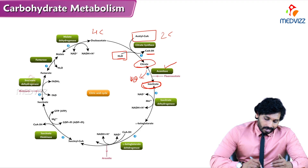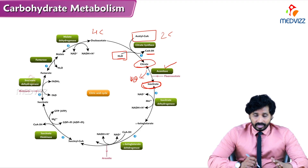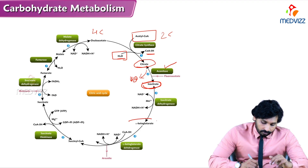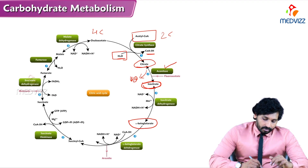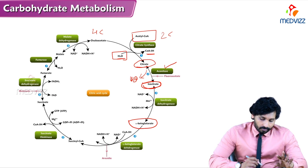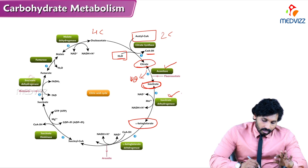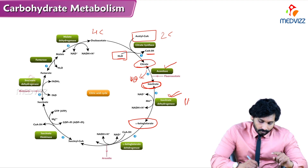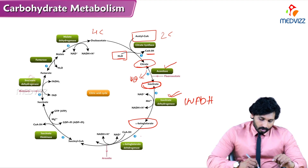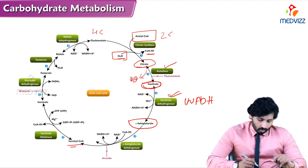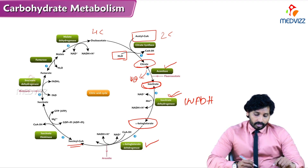In the third reaction, isocitrate undergoes dehydrogenation — removal of hydrogen — to form alpha-ketoglutarate. This reaction requires manganese ions as an activator for isocitrate dehydrogenase. The first NADH is produced here.